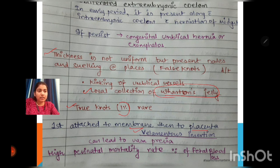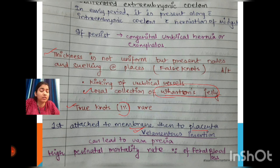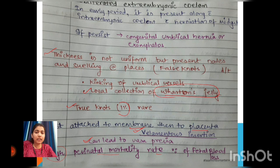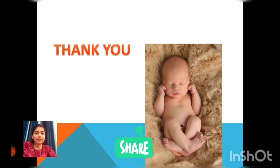When the umbilical cord is first attached to the membrane and then to the placenta, this is called velamentous insertion of the cord — a defect. This can lead to vasa previa, which has a high perinatal mortality rate because of fetal blood loss. It is a very rare but very dangerous condition for the child, and can lead to fetal loss.